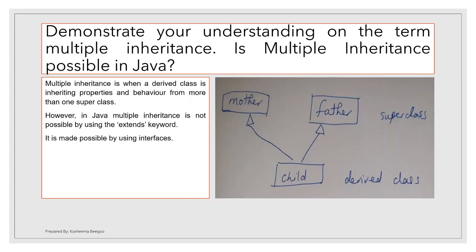Now, is multiple inheritance possible in Java? When we talk about inheritance in Java using the 'extends' keyword, we can only specify one class after 'extends'. So multiple inheritance is not directly possible — however, it can be achieved in other ways, such as using interfaces, which we will cover in the next session.